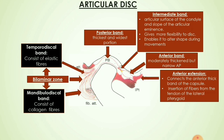The articular disc has around five zones. The first zone is the anterior extension, which helps in the insertion of fibers from the tendon of the lateral pterygoid muscle and connects to the anterior thick band of the capsule. Next is the anterior band, which is moderately thickened but narrow anteroposteriorly. Then there is the intermediate band — the area over which the articular surface of the condyle and the slope of the articular eminence approximate; it gives more flexibility to the disc and enables it to alter shape during movements.